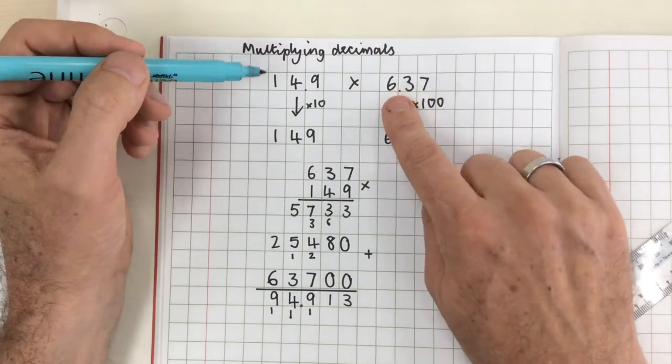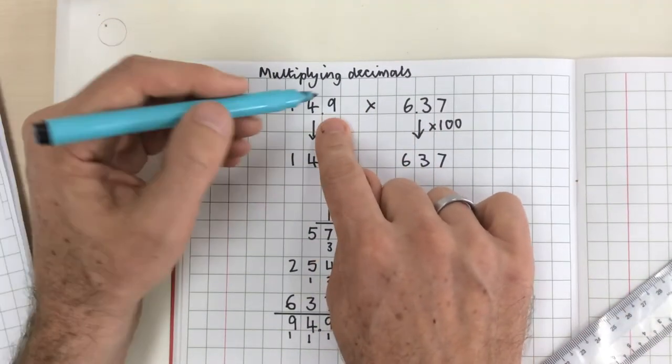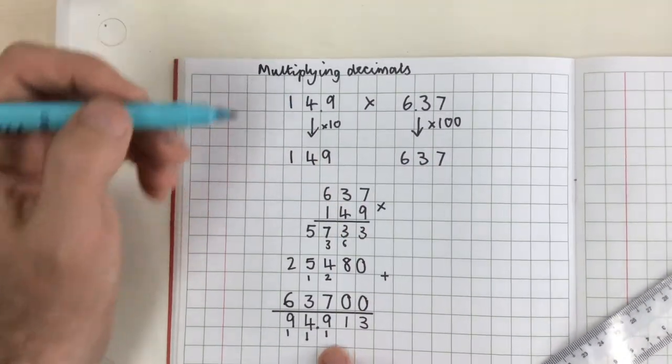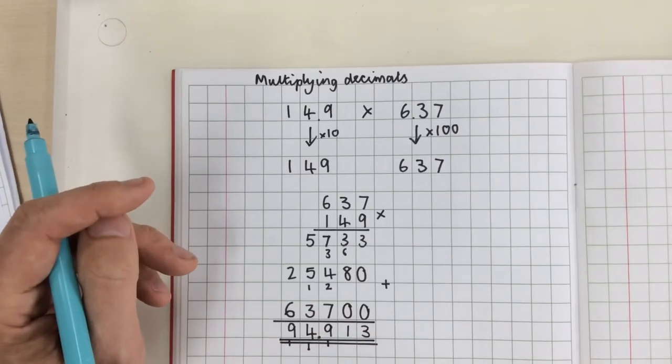If I had 6 times 15, that rounds to 15. 6 times 15 is about 90 so I'm fairly happy with my answer of 94.913.